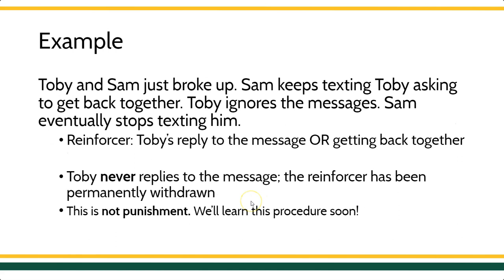Toby and Sam just broke up. Sam keeps texting Toby asking to get back together. Toby ignores the messages, and Sam eventually stops texting. The reinforcer here could be Toby's reply or getting back together — but that never happens; it's permanently withdrawn. Toby never replied — it's done, absolutely gone. So this is not an example of negative punishment; this is the permanent removal of a reinforcer, which is something else entirely. We haven't learned this procedure yet, so if you get examples that are close but missing some features — like being a permanent rather than temporary removal — you can just put 'unknown.'